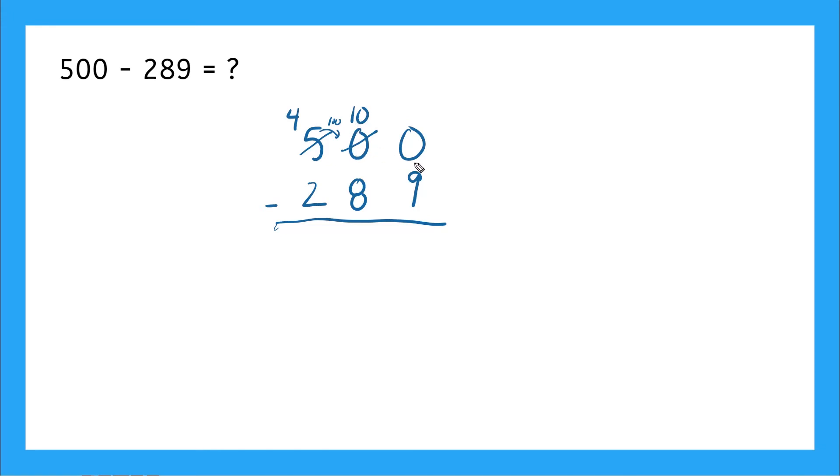Remember, but I still need to borrow again. So I'm going to take one of these. This gives me nine. I'm giving that 10 over here. So this zero becomes a 10. So I got 10 in the ones.